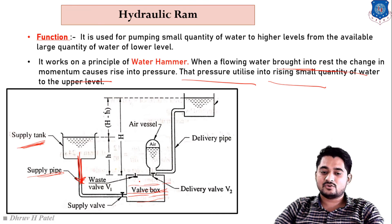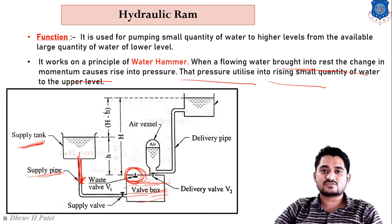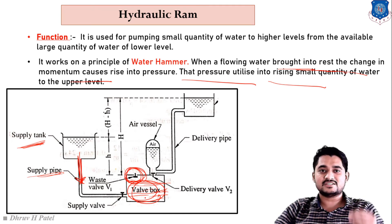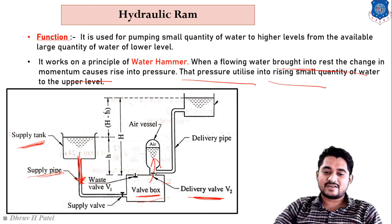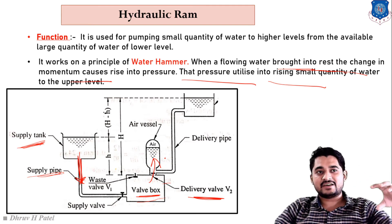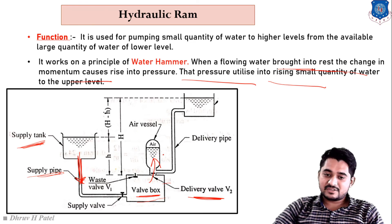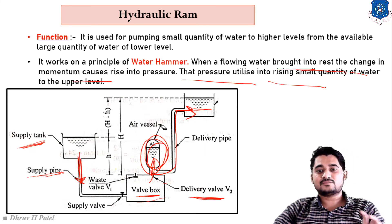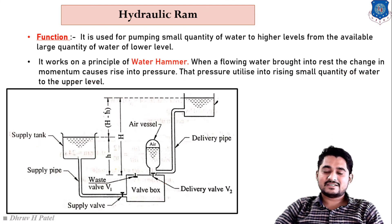As the pressure in the valve box increases, the level of water rises, and the waste valve closes by itself due to its design. With the waste valve closed, the pressure intensity in the valve box increases rapidly. The delivery valve then opens by itself, and water from the valve box moves to the air vessel. In the air vessel, compressed air and higher pressure water together push water into the delivery pipe, giving it elevation.